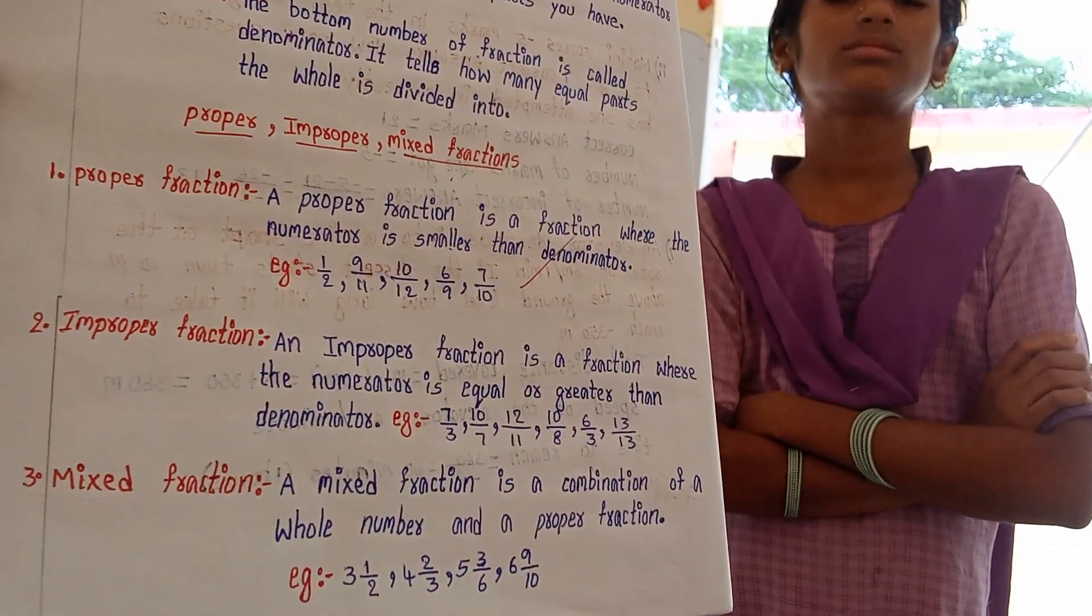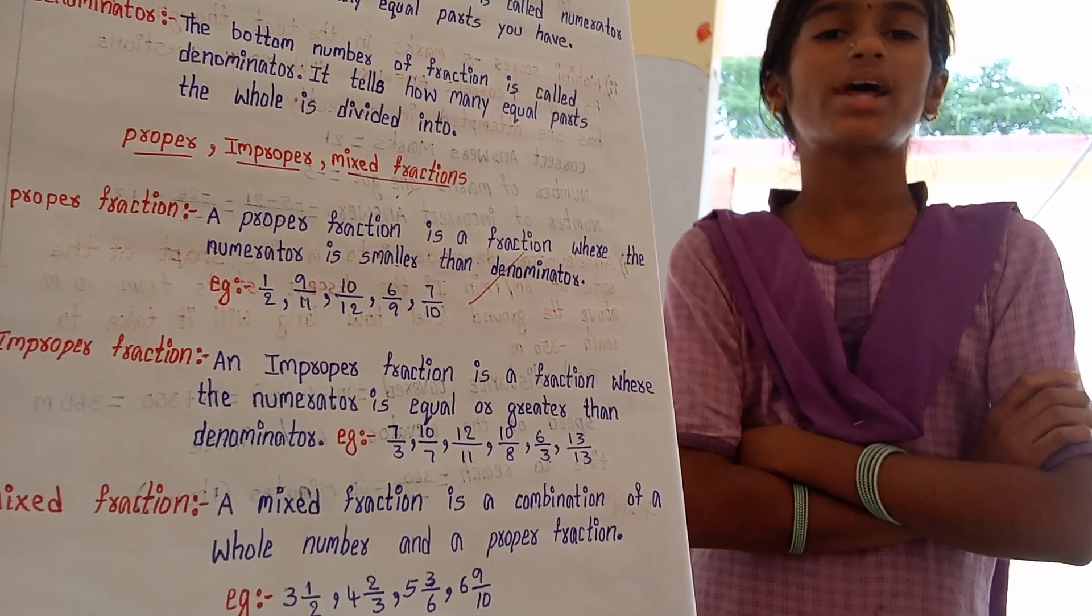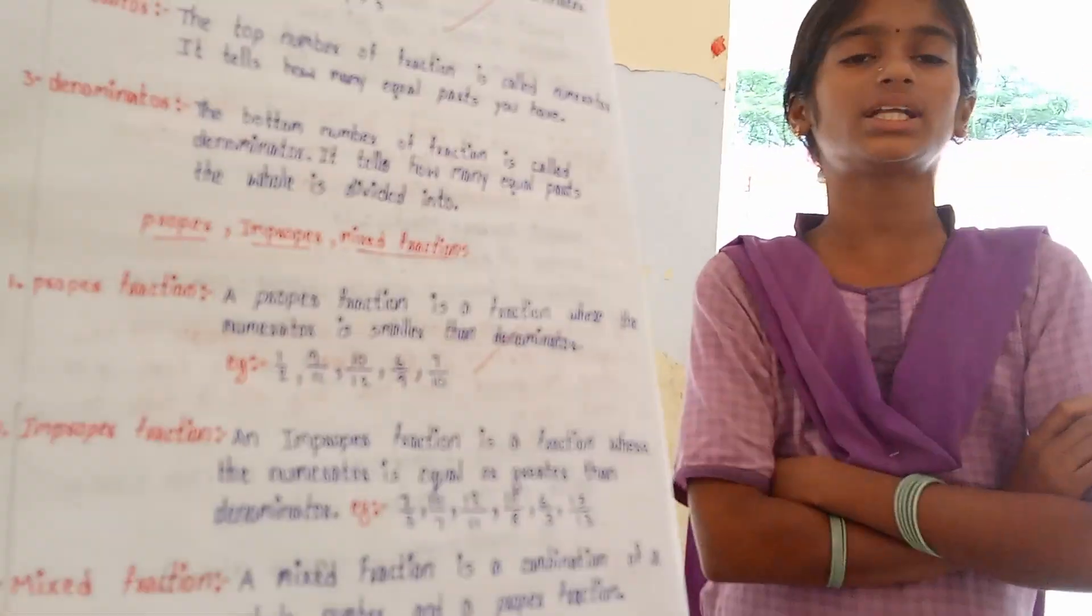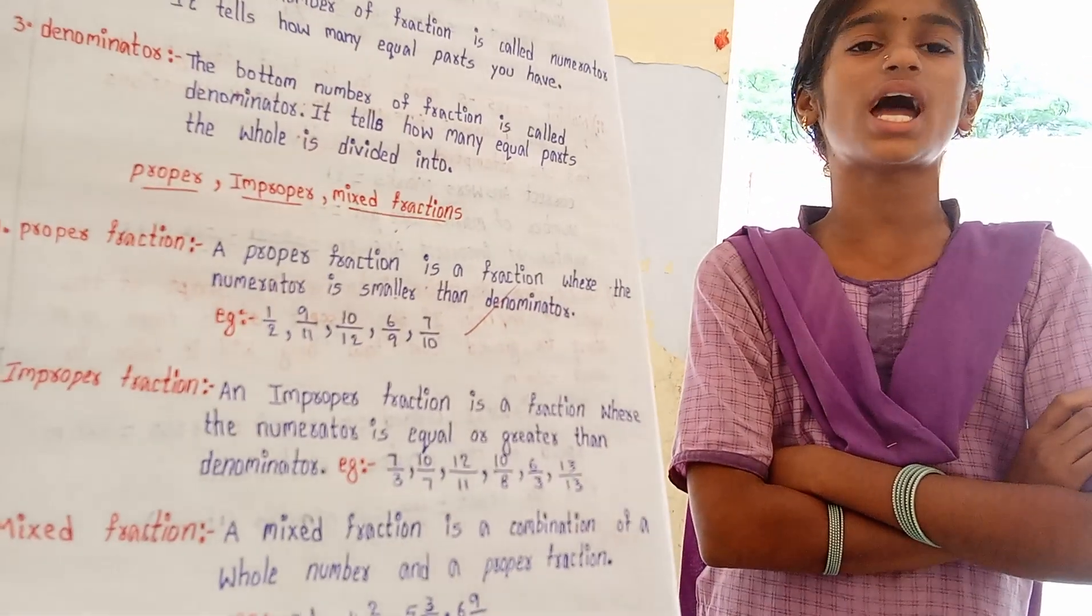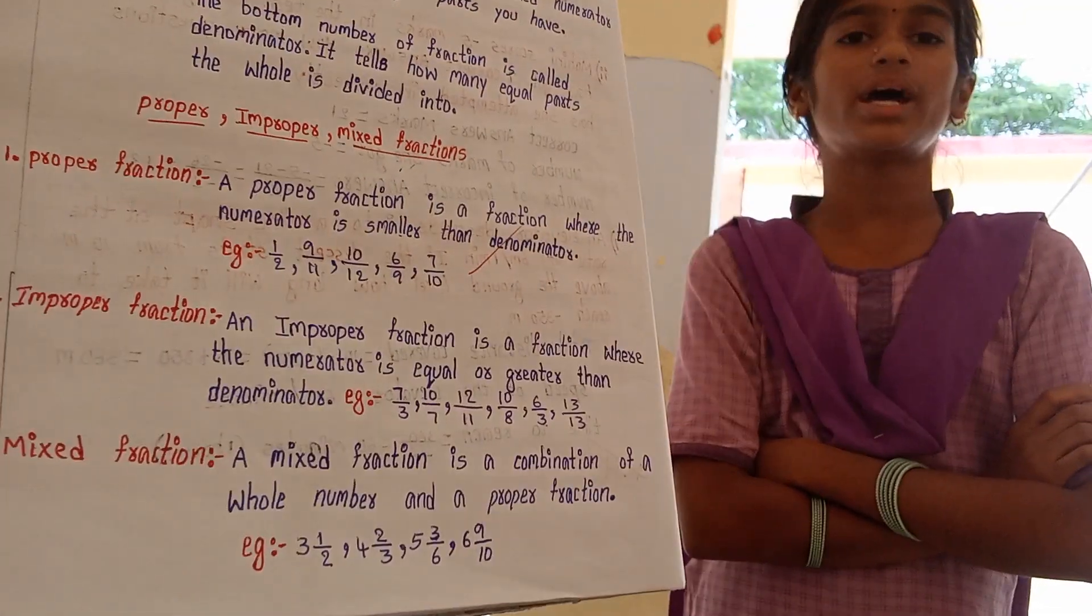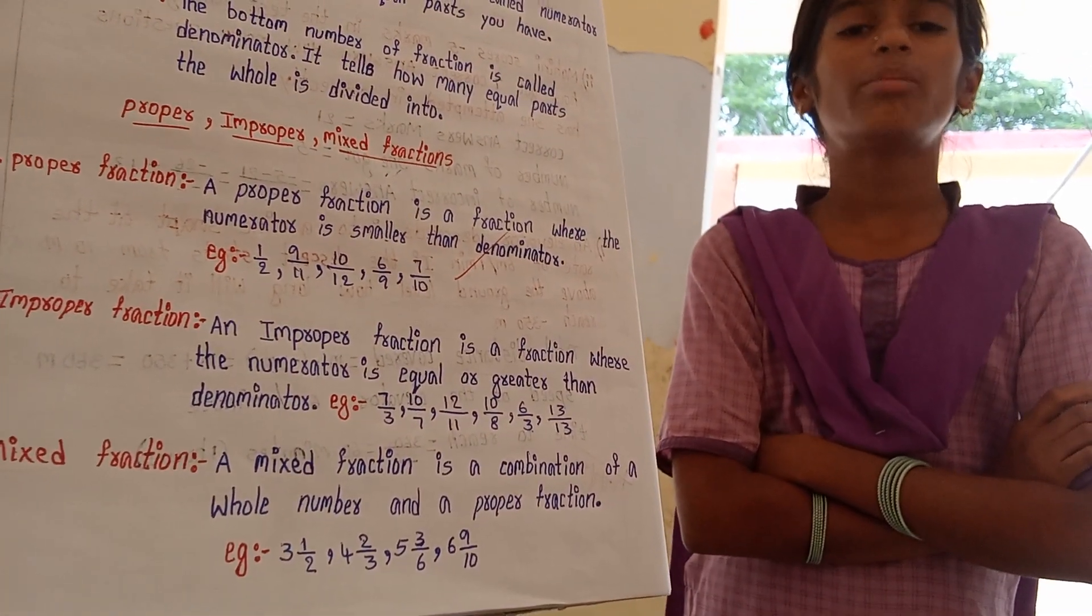Define the improper fraction. An improper fraction is a fraction where the numerator is equal to or larger than the denominator. Example: 7/3, 12/8.